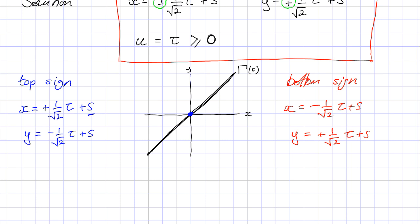This would be starting at this point here on my characteristic curve. This is s equals zero at this point. Then you see, tau is going to be greater than zero, so as I increase tau, x will increase and y will decrease.